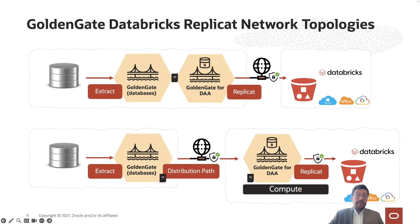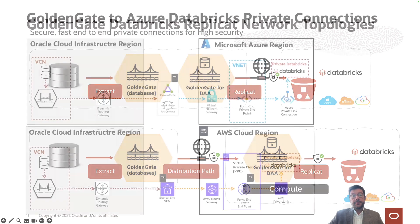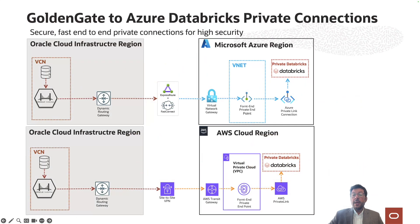GoldenGate provides flexible deployment options. You can run GoldenGate in your data centers, on a compute instance on a cloud service, or simply mix them. You can run your source deployment close to the source system and target deployment on the cloud close to your Databricks workspace. GoldenGate also supports connections to private Databricks workspaces using private links for the highest security.